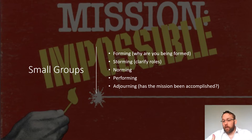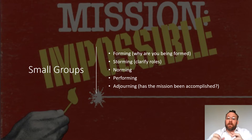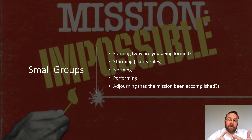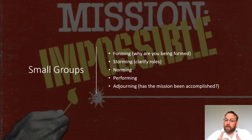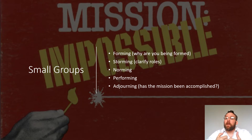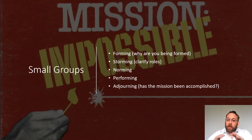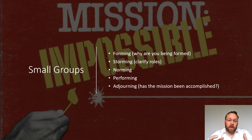The storming phase is when you're trying to clarify roles within the group — this is where tension and conflict come into play. Somebody has to do the outline, somebody writes the paper, somebody does the PowerPoint, somebody is the point person sending out reminders — secretaries, treasurers, presidents, vice presidents. You're going to have friction: somebody might say they really want to do the PowerPoint, someone else also wants to do it. You have to work out how the group can function best given different roles.